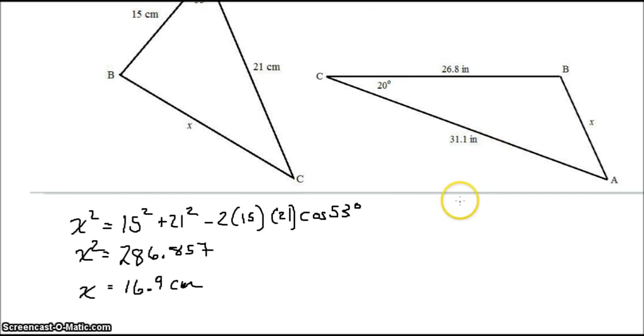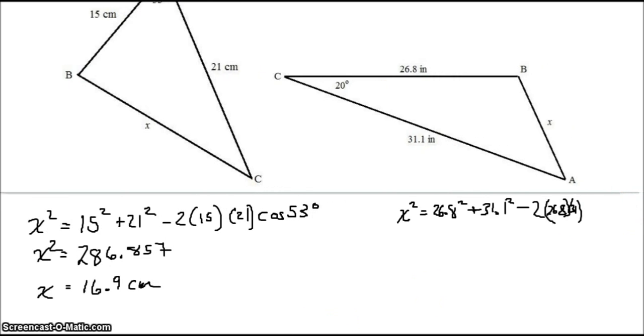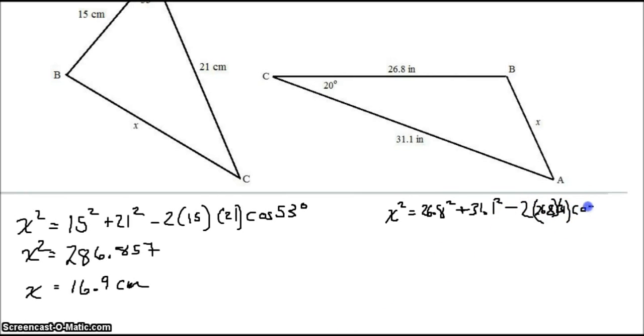Taking a look at this other triangle here, we can do something similar. X squared will equal 26.8 squared plus 31.1 squared, minus 2 times 26.8 times 31 times cosine of 20 degrees. And so X will, of course, equal the square root of all of that, which turns out to be about 10.9 inches.